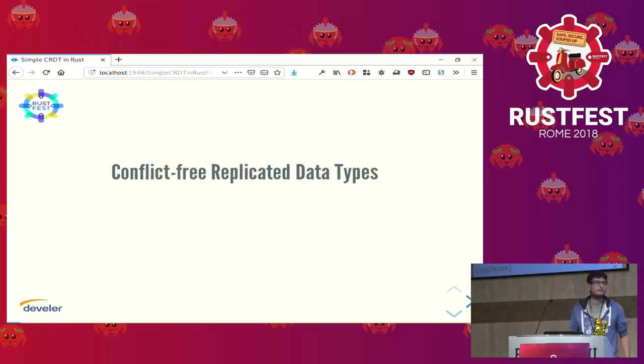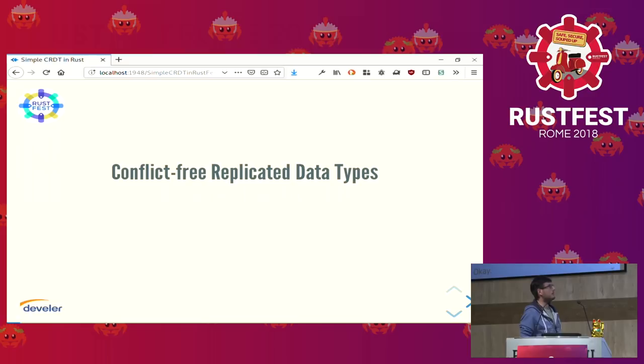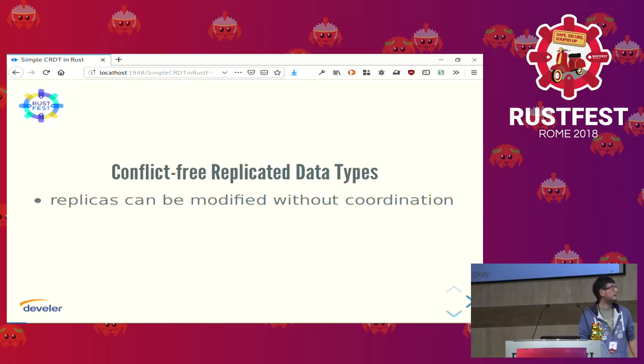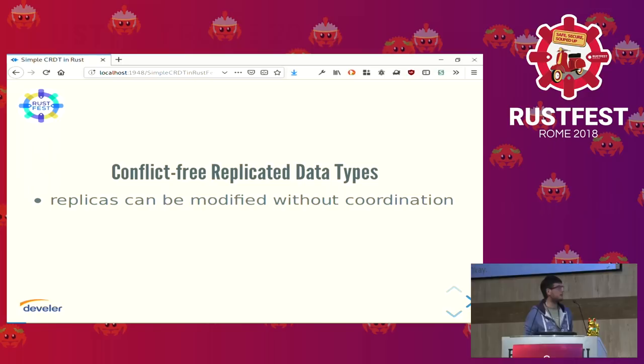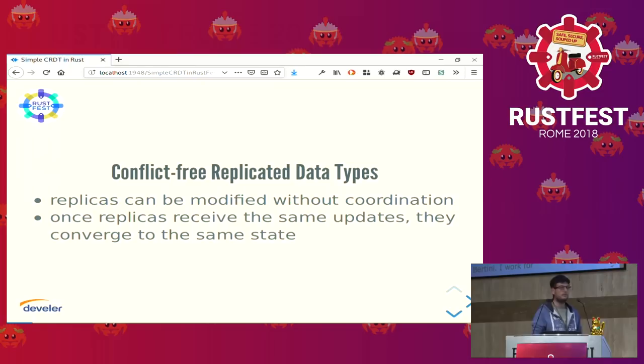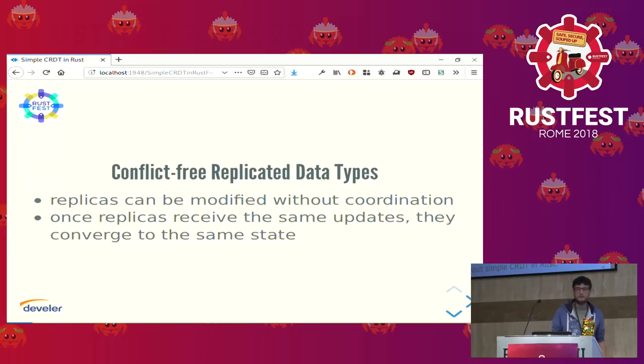The acronym has already been expanded: conflict-free replicated data types are an abstract data type designed to be replicated in a network, with the property that you are free to update the replica without coordination. And eventually, when you need some uniform view of your state, you can merge all these replicas together and converge to some unique state.